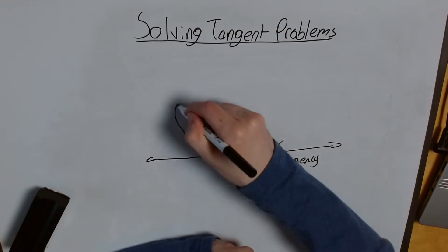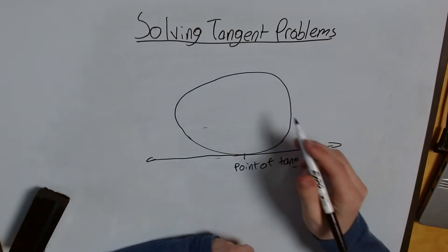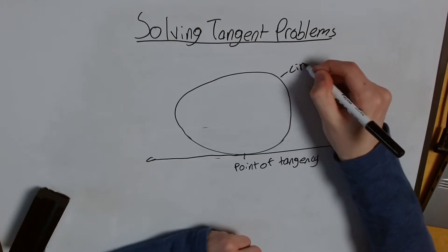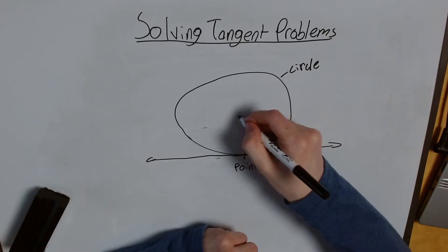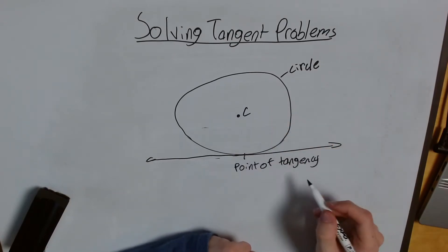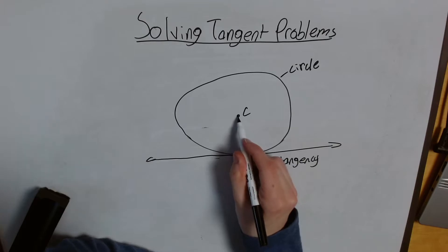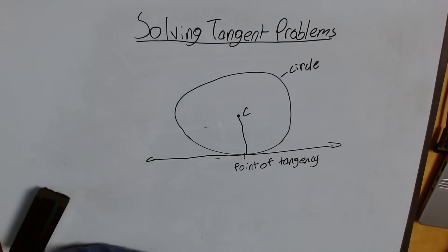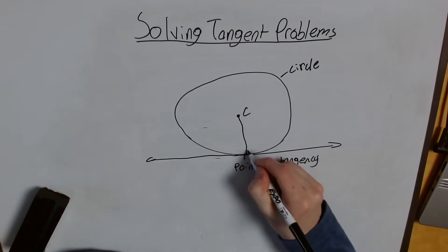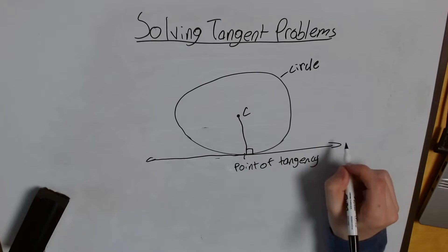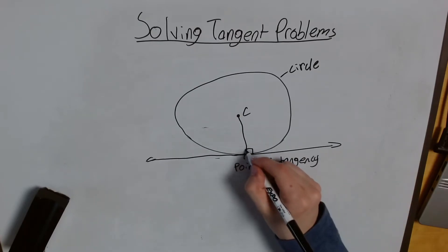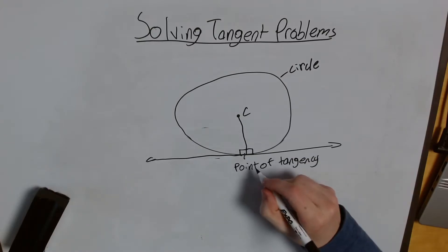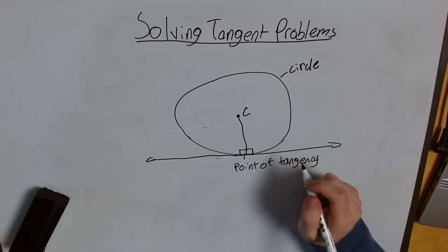Well, the first rather interesting property about tangents is that if we have our circle here, and I know this is more of an oval shape, but let's just call this a circle. We have our center here. I'm going to call it C. If I were to draw a radius from here to the edge of the circle, I would form a right angle between this radius here and my tangent line. So a tangent line is always going to be perpendicular to the radius of a circle.